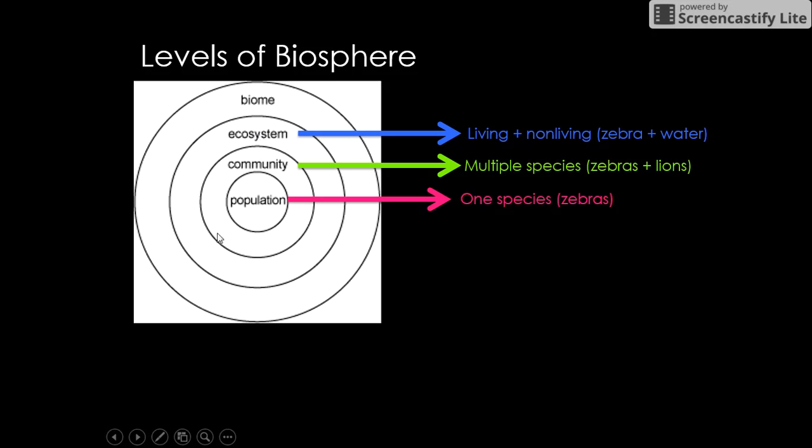Population is inside a community because we're getting bigger as we go out. Then we get into ecosystem. Ecosystem is even bigger than community and population. So this is all of our living and non-living things. We have living things in the world like animals, people, all different things that are alive, plants, but we also have non-living things like water, rocks, soil.